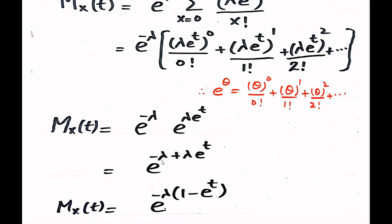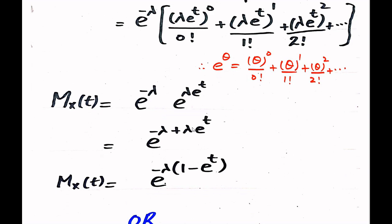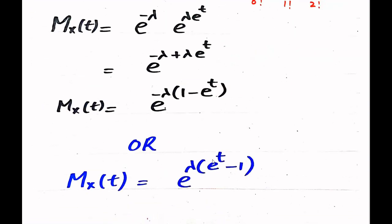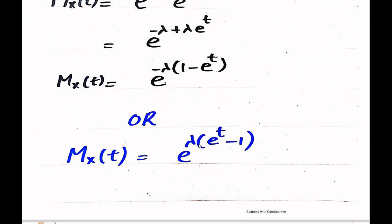Since the bases are the same, we add the exponents: -λ + λe^t. Taking -λ as a common factor gives -λ(1 - e^t), which simplifies to λ(e^t - 1). Therefore, the moment generating function of the Poisson distribution is M_x(t) = e^(λ(e^t - 1)).